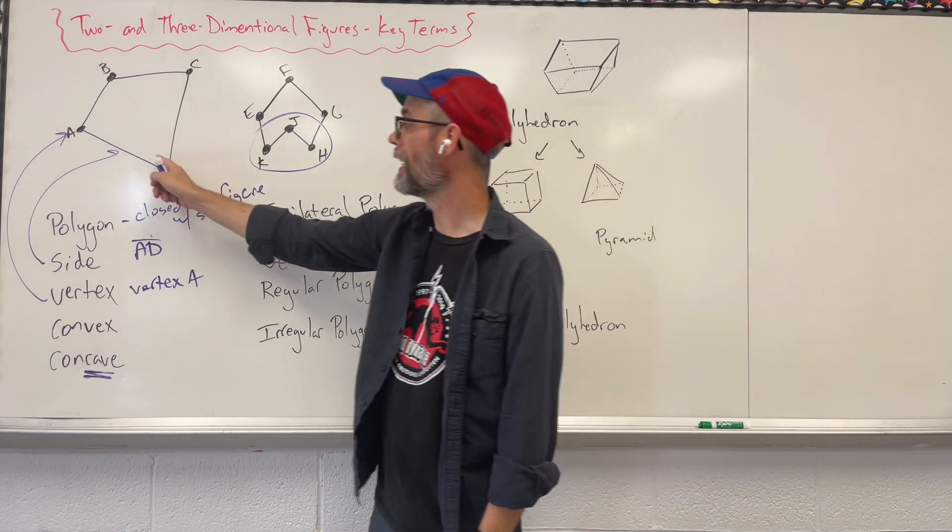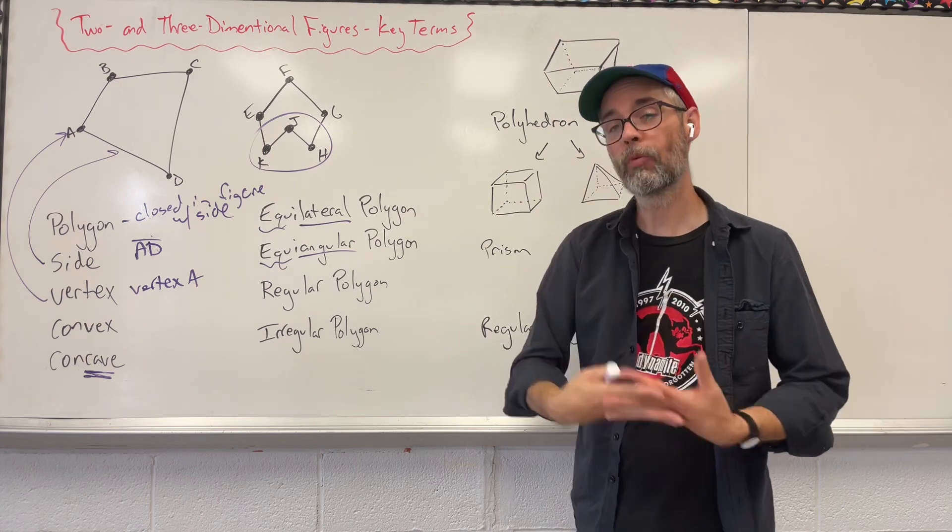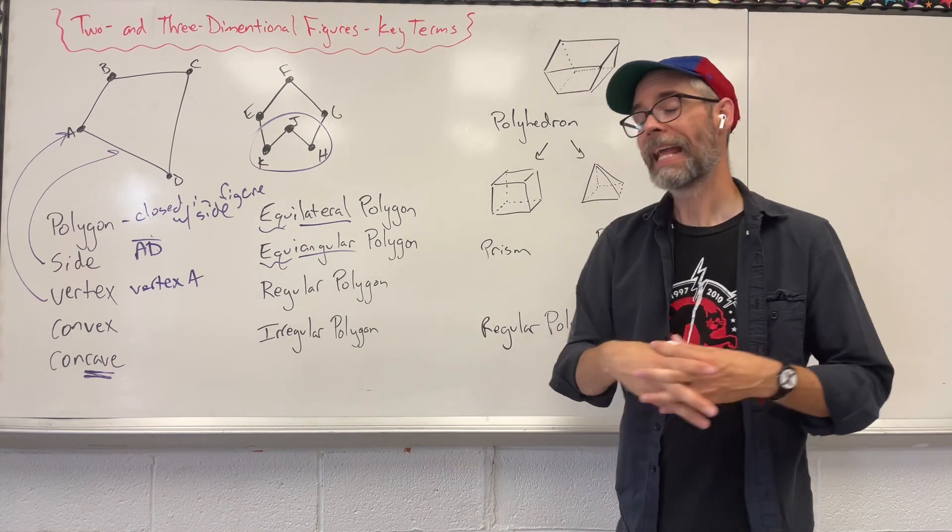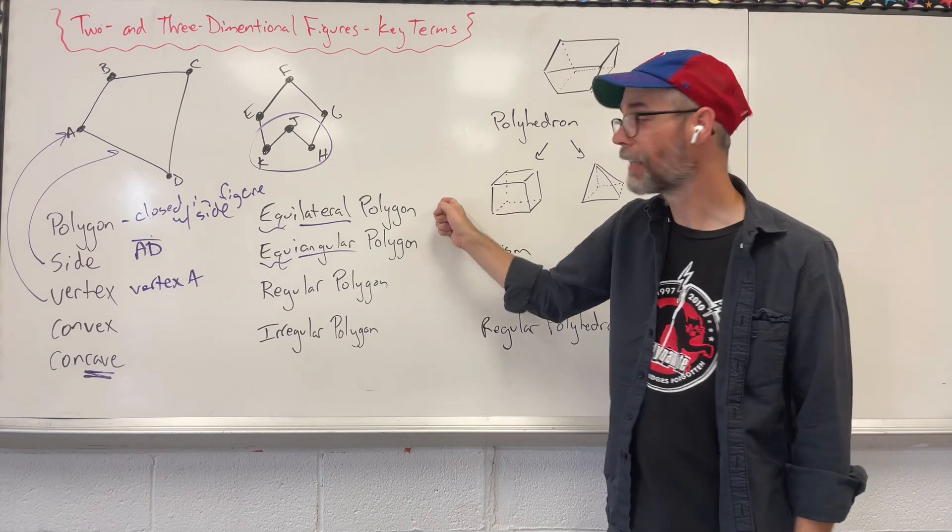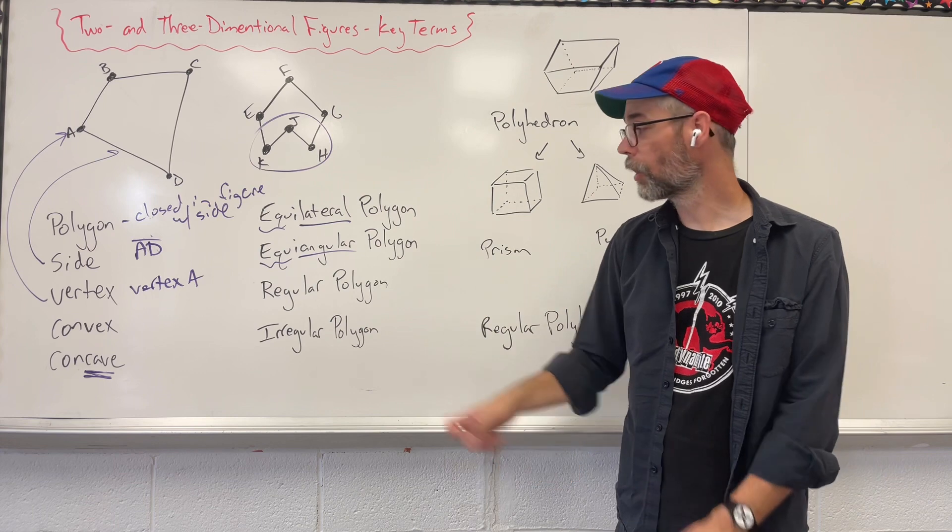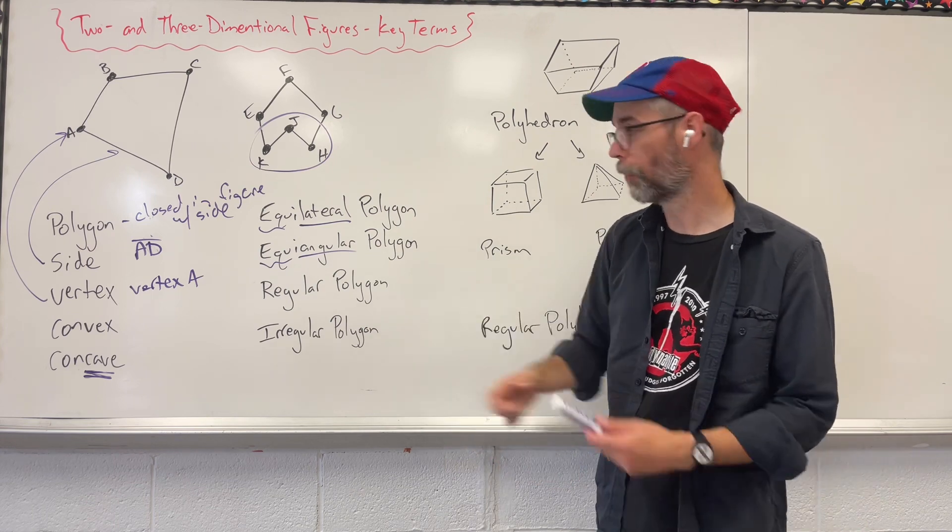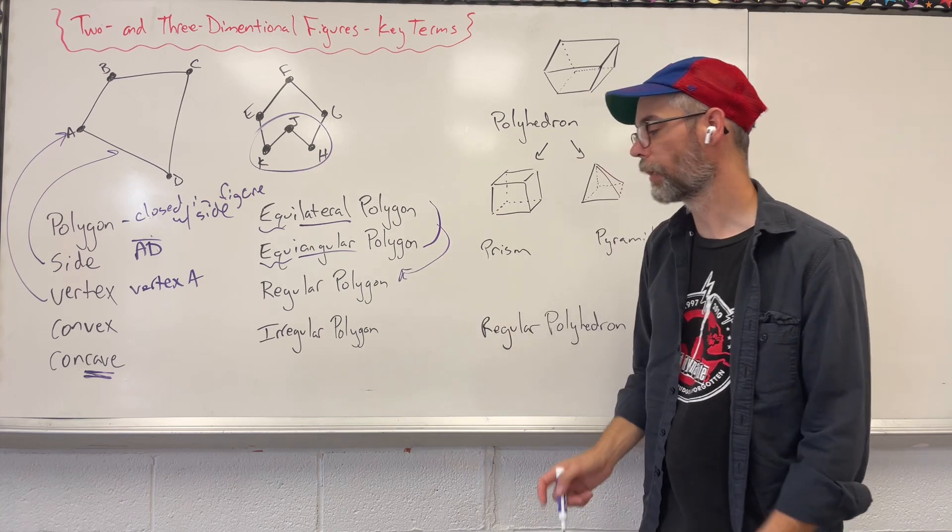If all of the angles measure the same, we then call that an equiangular polygon. Now, when you have both equilateral, same sides, and equiangular, same angles, within a polygon, we call that a regular polygon. So taking both of these, put them right there. That's a regular polygon.